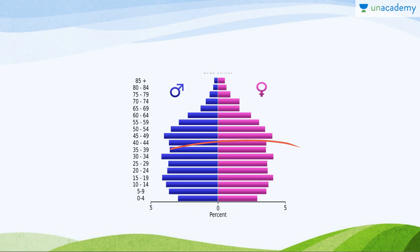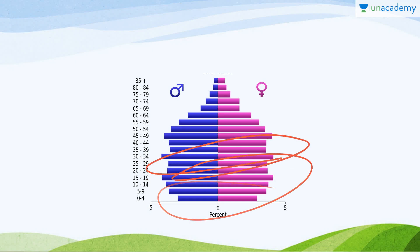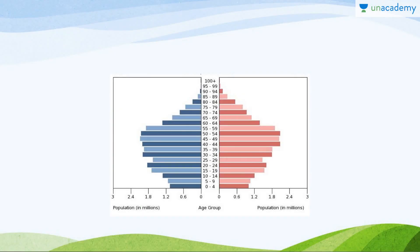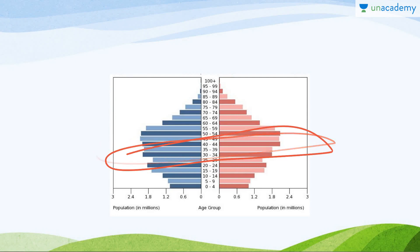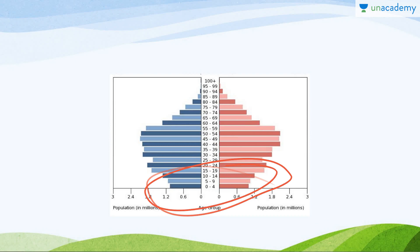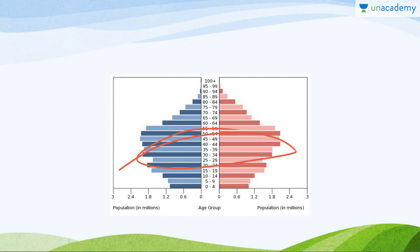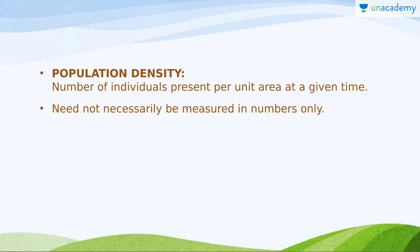In a stable population, the number of individuals in the pre-reproductive and reproductive age groups is the same. So when the pre-reproductive moves to reproductive, the numbers stay the same, births remain constant, and population growth rate remains unchanged. In a declining population, the reproductive age group has more individuals than the pre-reproductive age group. After some time, fewer individuals move into the reproductive age group, the birth rate decreases, and the population declines.